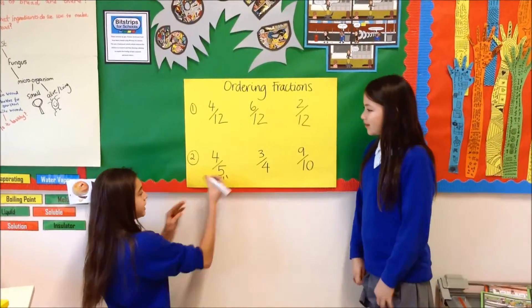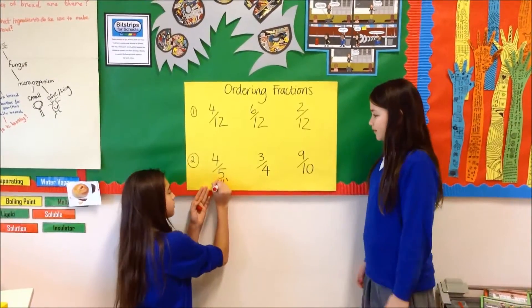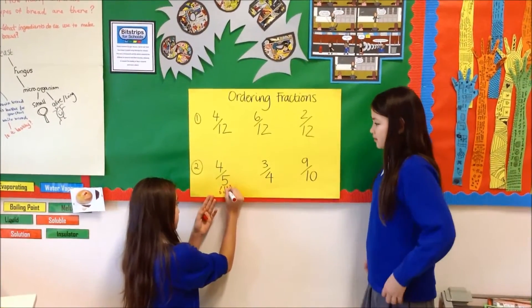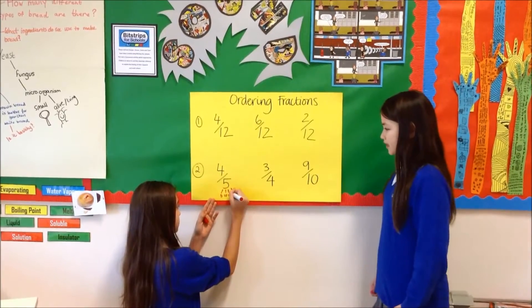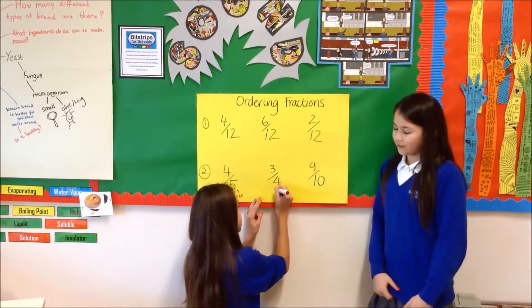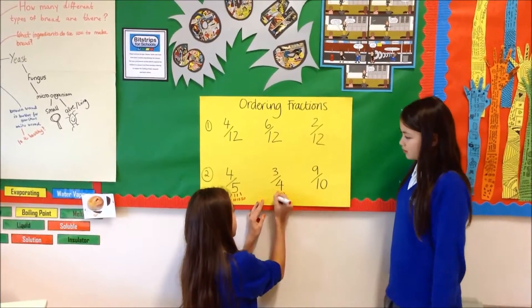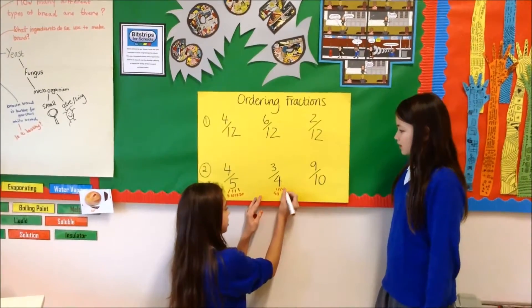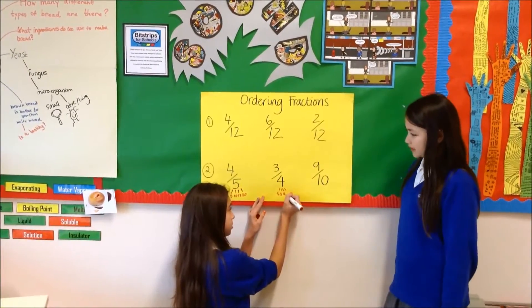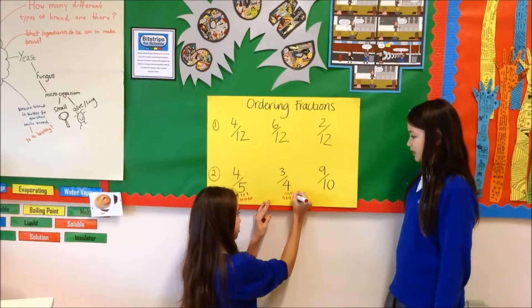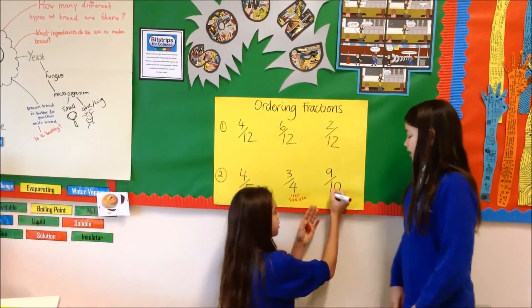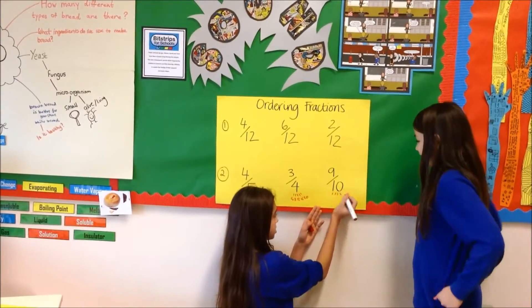So first it's 5: it's 10, 15, and 20. Then here it is: it's 4, 8, 12, 16, and 20. And then here it is 10, 20.